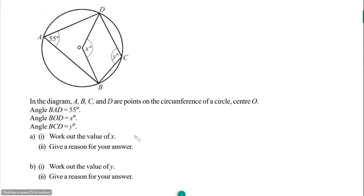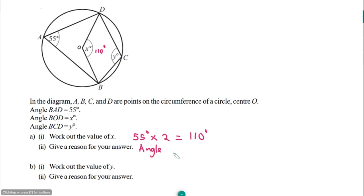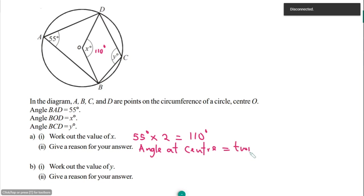So x is going to be 55 degrees times 2, and that's going to give me 110 degrees. So angle x is 110 degrees. The reason for this answer is: the angle at the center of a circle is equal to twice the angle at the circumference.